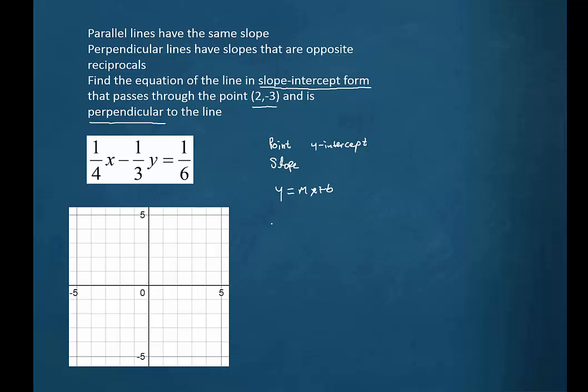What we know is that our line will be perpendicular to the line one fourth x minus one third y equals one sixth. So we'll begin by finding the slope of this line, and we'll do that by solving for y.